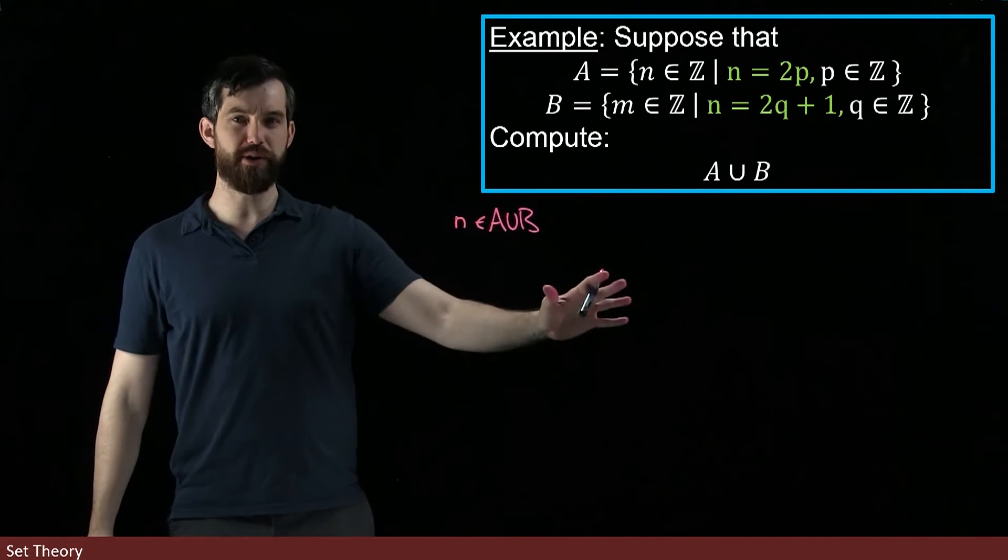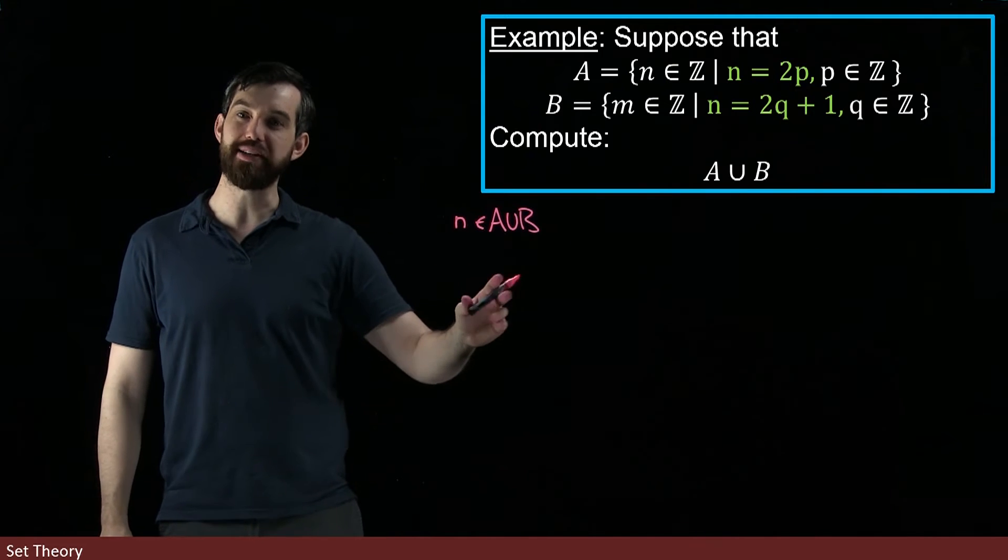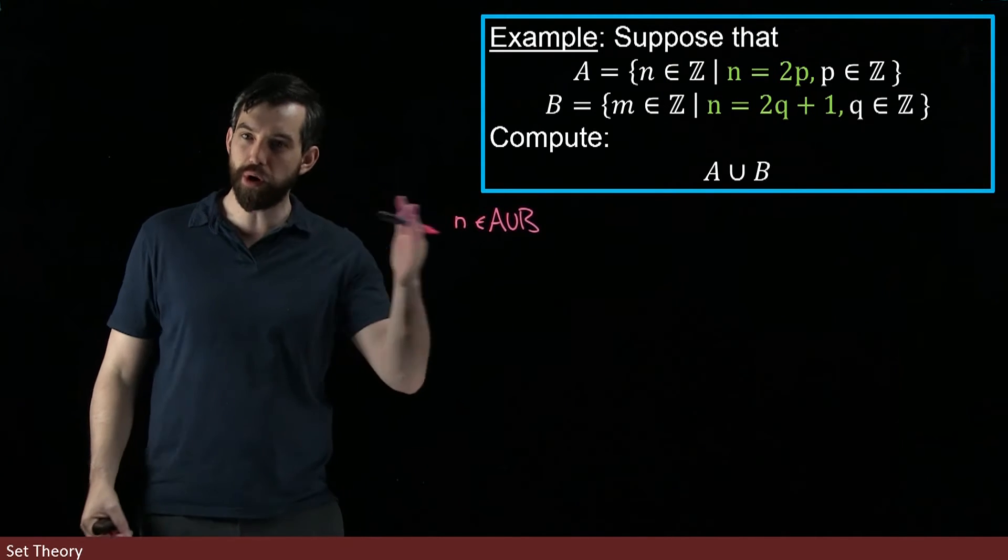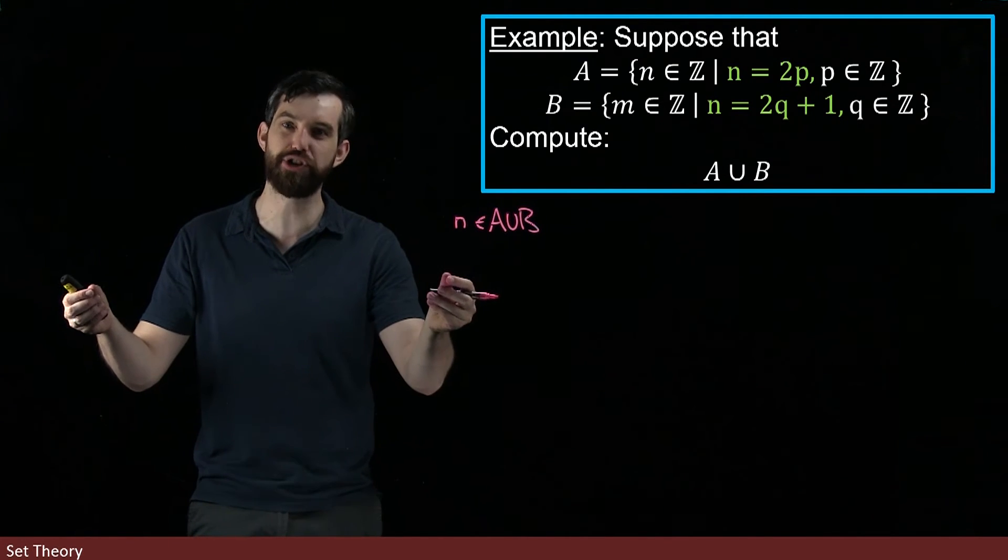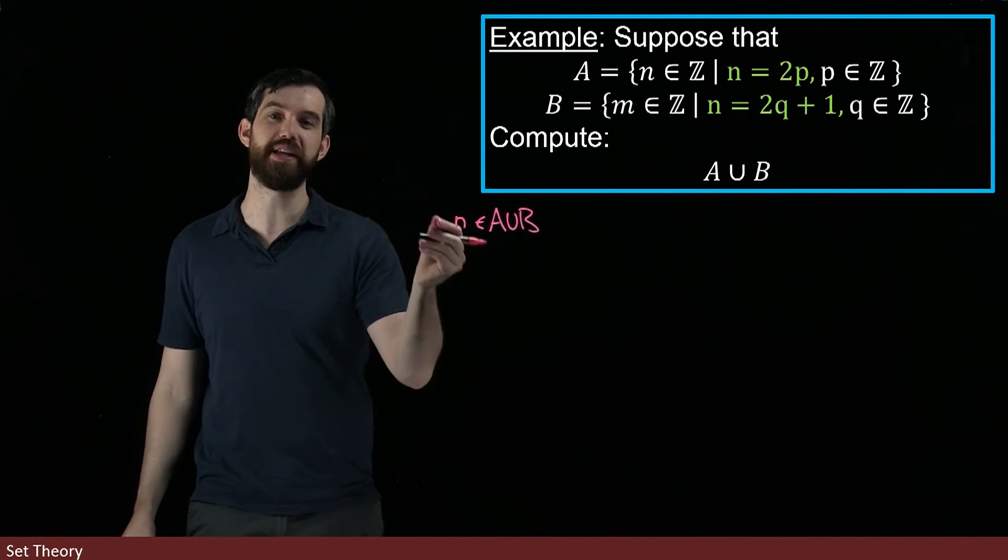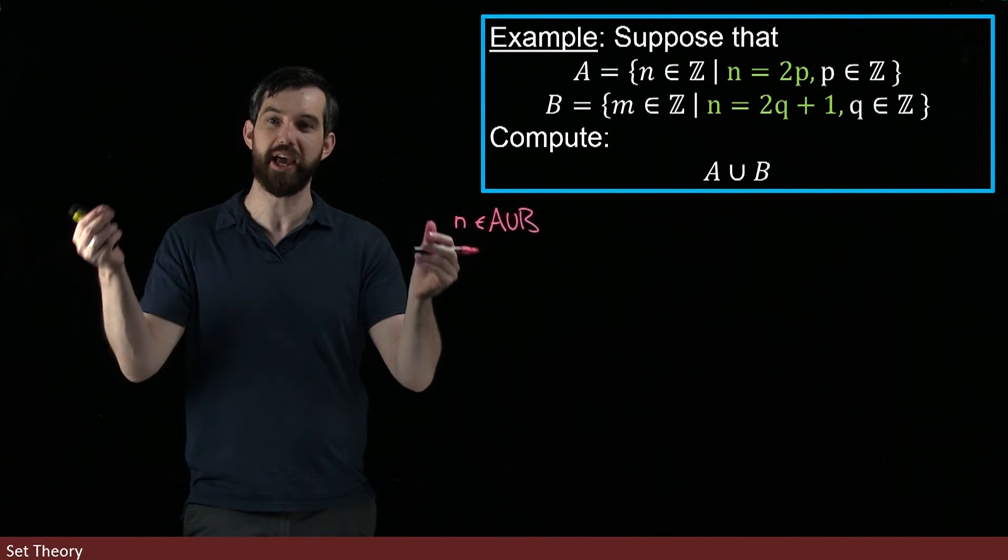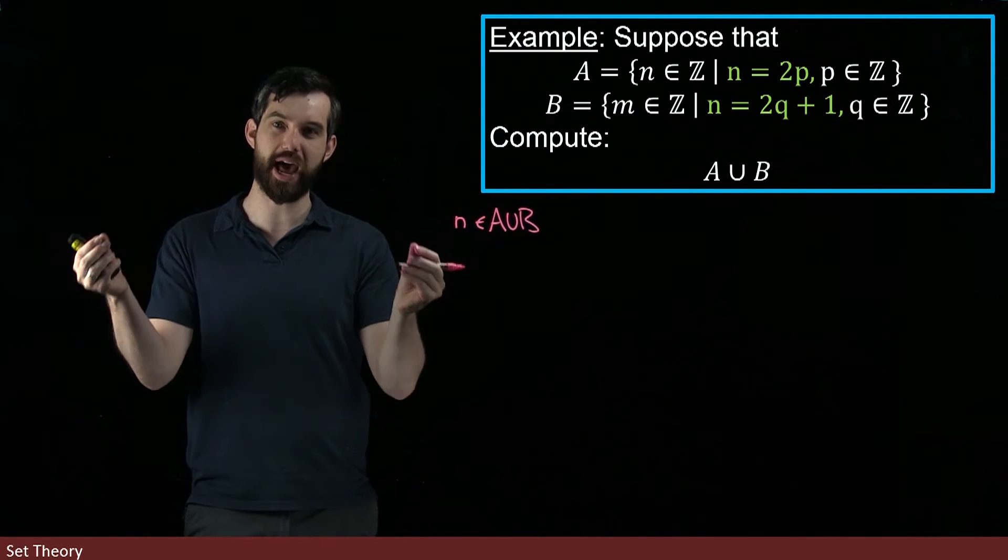So what I'm going to do here is make sure that every statement I write down is if and only if, that it works both directions. That means I'm able to take an element in A ∪ B and show it's in the integers, or take an element in the integers and show it's in A ∪ B. That's what tells me that I have equality.